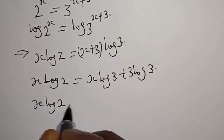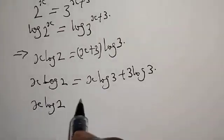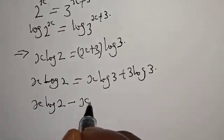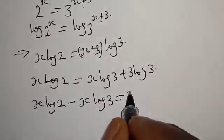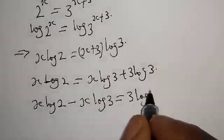x log 2, if this x log 3 crosses to the other side it will be minus x log 3, is equal to 3 log 3.